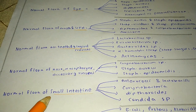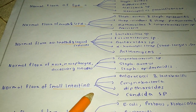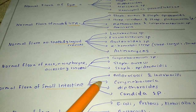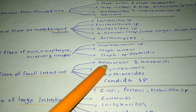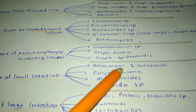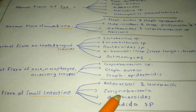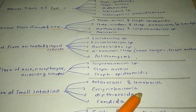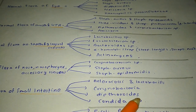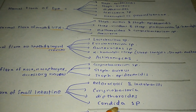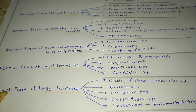The normal flora of the small intestine includes Enterococcus and Lactobacillus species, Corynebacterium species, diphtherioids, and Candida species.